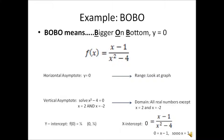Our first example is a BOBO style of graph. BOBO means bigger exponent on the bottom, which gives a horizontal asymptote of y equals 0. One of your guided note functions should say BOBO above it — it should match to the function f(x) equals x minus 1 divided by x squared minus 4. We're going to find the horizontal asymptote, vertical asymptote, domain and range, x-intercepts and y-intercepts. The horizontal asymptote is y equals 0 because this has a bigger exponent on the bottom. You should draw a dashed line at y equals 0 right now.